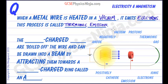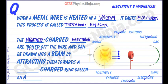So we've ticked off electrons and thermionic emission. The negatively charged electrons are boiled off the wire and can be drawn into a beam by attracting them towards a positively charged ring called an anode.